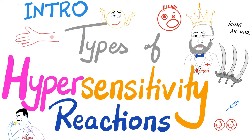In a previous video on this channel, I've talked about the complement system with its three pathways: the classical pathway, the alternative pathway, and the lectin pathway. Today, we have an introduction about the types of hypersensitivity reactions. We have Type 1, Type 2, Type 3, and Type 4 hypersensitivity.